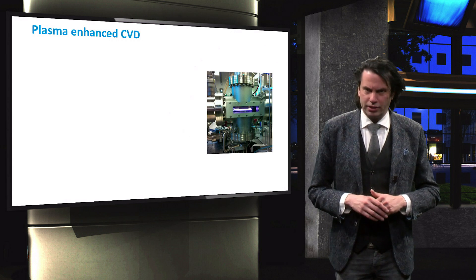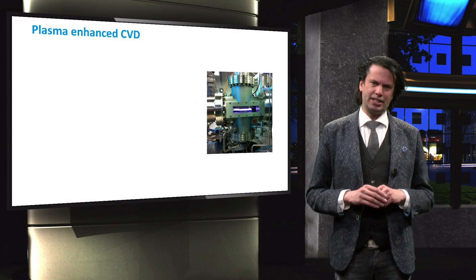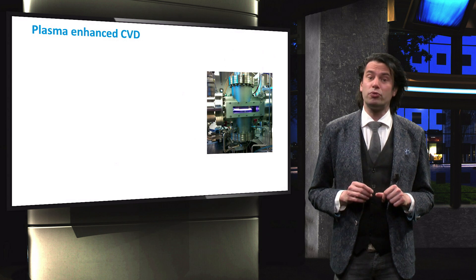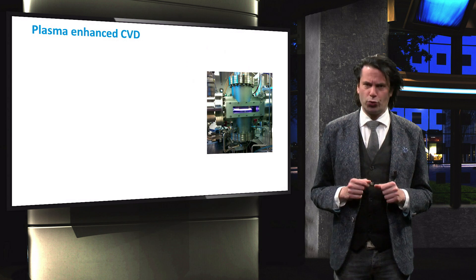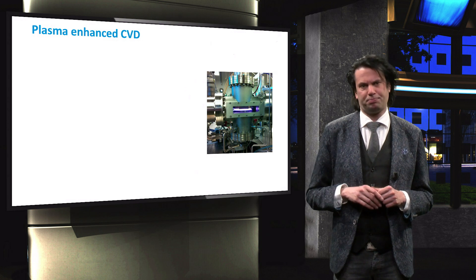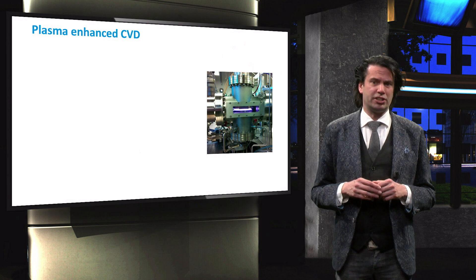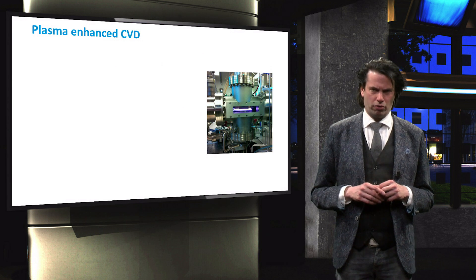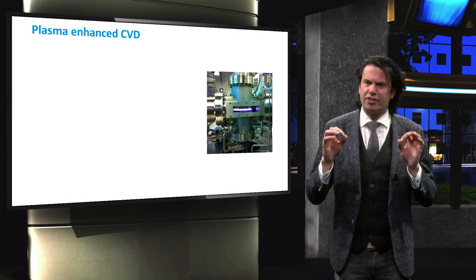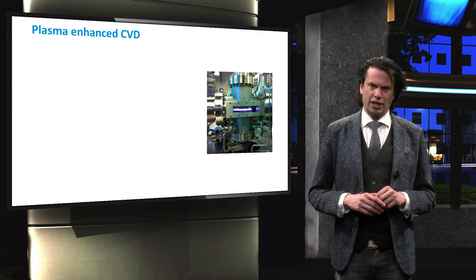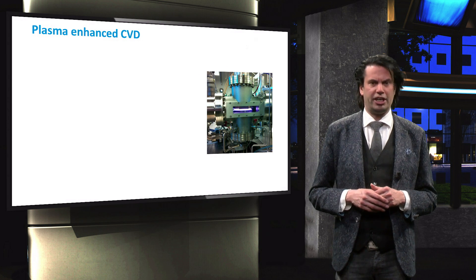We will start with this chemical vapor deposition. A CVD is a deposition technique that uses a chemical reaction of a gas phase precursor to accomplish the growth of a solid material on a substrate. This is unlike a physical vapor deposition technique, where no chemical reaction occurs. CVD is practiced in a variety of formats. These processes generally differ in how chemical reactions are initiated.